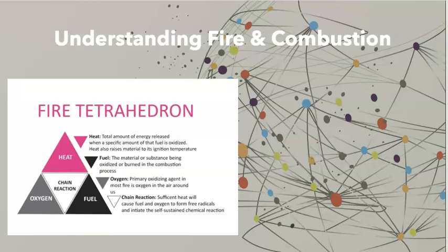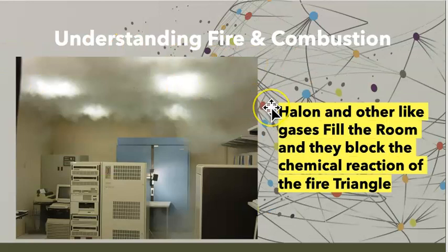If we're using something that attacks the tetrahedron, it's a gas that interferes with the chemical chain reaction. It mops up those free radicals in that chemical reaction using BCF or other halon extinguishers, which also creates an inert gas barrier. That's what's going on with halon and other light gases. They fill the room.